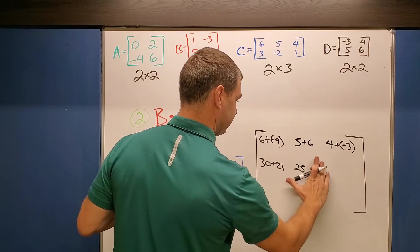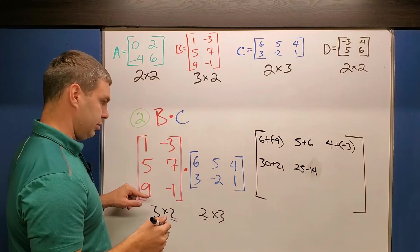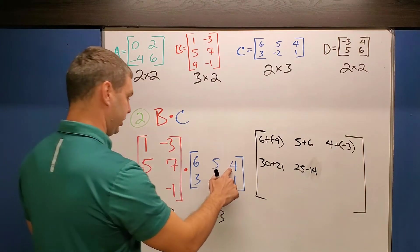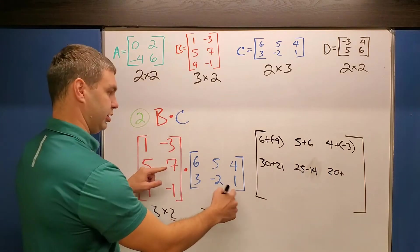And then 5 times 4 is 20 plus 7 times 1 is 7.